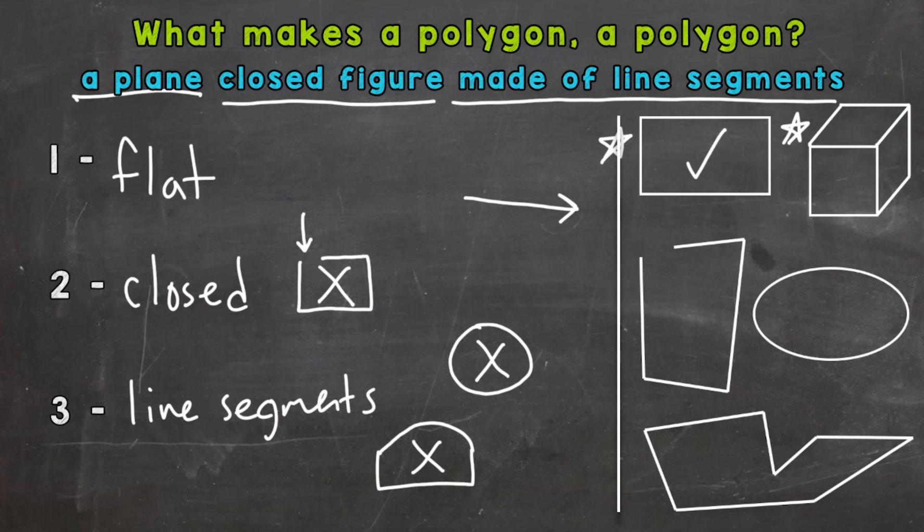Let's go over to the cube here. It is not flat, it is closed, and it is made of line segments, but remember we have to have a check mark next to all three characteristics. So a cube is not a polygon because it's three-dimensional.